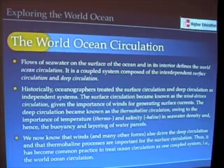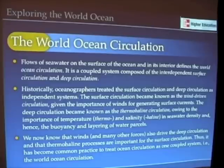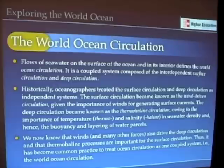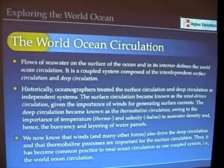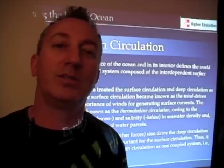What we define here is an interdependent surface and deep circulation that we call the world ocean circulation. Historically, oceanographers treated them as different things — the surface circulation called the wind-driven circulation, and the deep circulation called the thermohaline circulation, because temperature and salinity affect seawater density, buoyancy, and the layering of water. But we now know that winds also drive the deep circulation, and that thermohaline processes are important for surface circulation as well. It's just one big ocean and one big world ocean circulatory system.